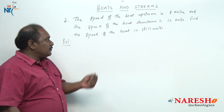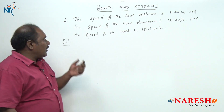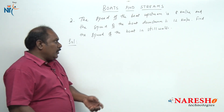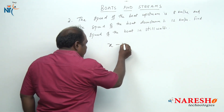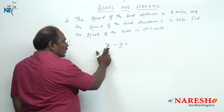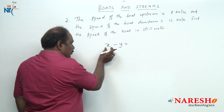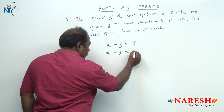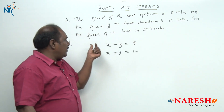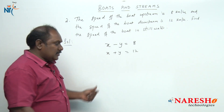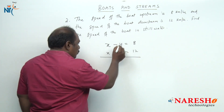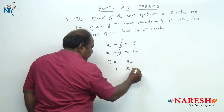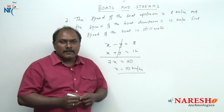The second problem: the speed of a boat upstream is 8 kilometers per hour and the speed of the boat downstream is 12 kilometers per hour. Find the speed of the boat in still water. We are given x minus y equals 8 and x plus y equals 12. To find x, we eliminate y by adding the two equations: 2x equals 20, so x equals 10. The speed of the boat in still water is 10 kilometers per hour.